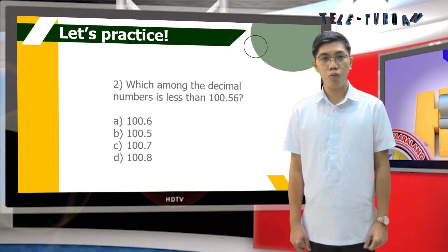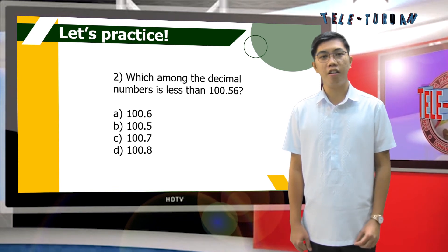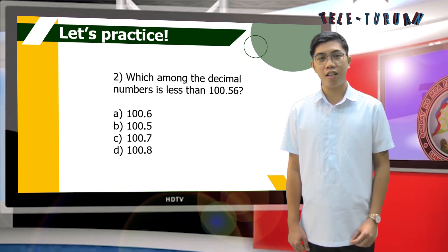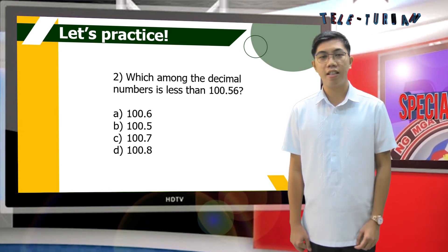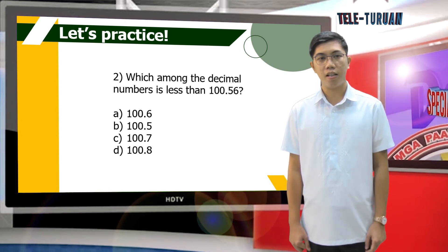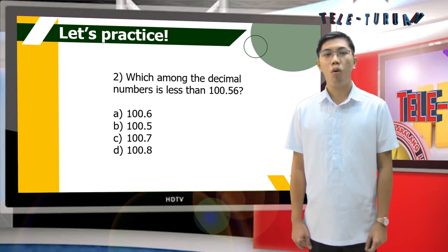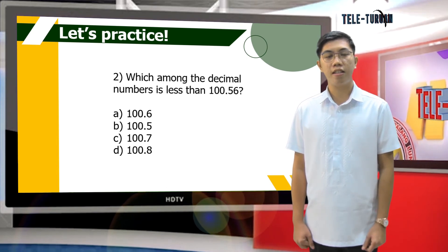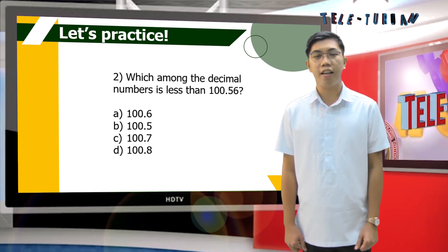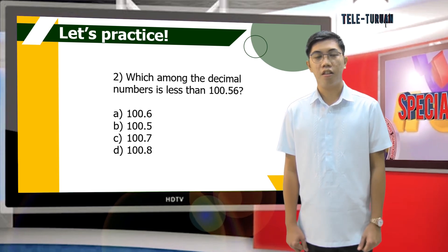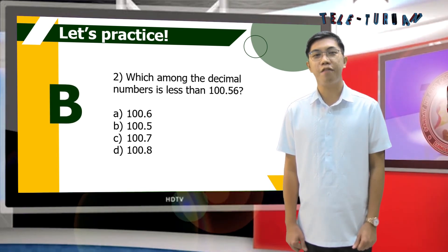Number 2: which among the decimal numbers is less than 156 hundredths? A: 106 tenths. B: 105 tenths. C: 107 tenths. Or D: 108 tenths. The answer is B, 105 tenths.